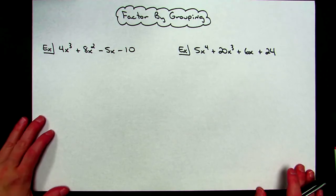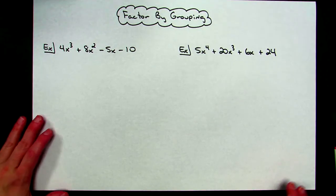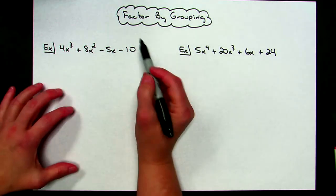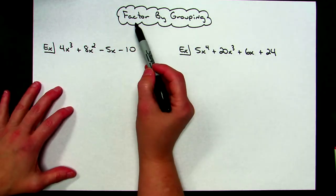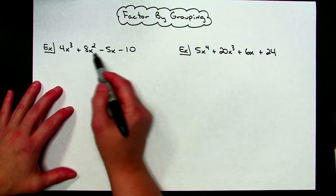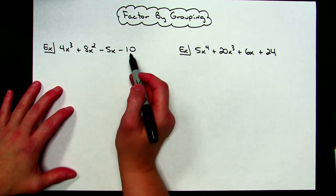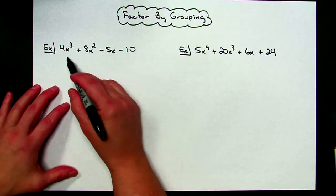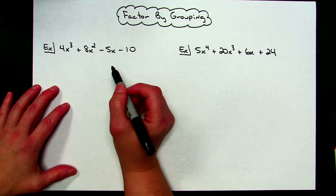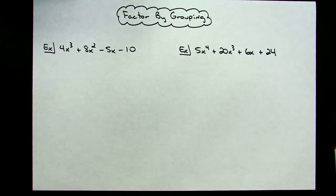Today we're going to take a look at factoring by grouping — the last thing that is usually taught in a chapter that deals with factoring. Every time you're going to be doing a factoring by grouping, chances are you're going to have four terms. So that should be what you look for: you see four terms, and then you're going to think, okay, this might just be a factor by grouping.